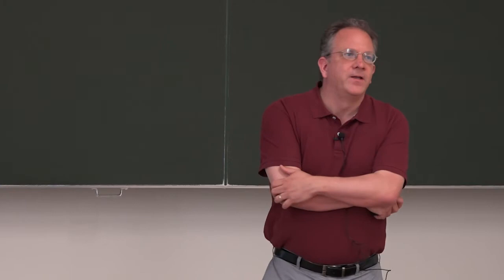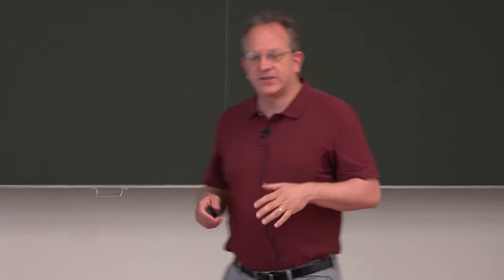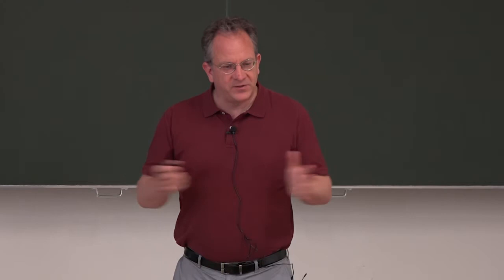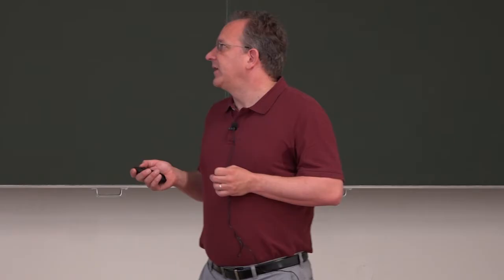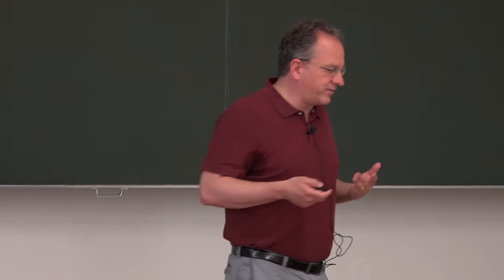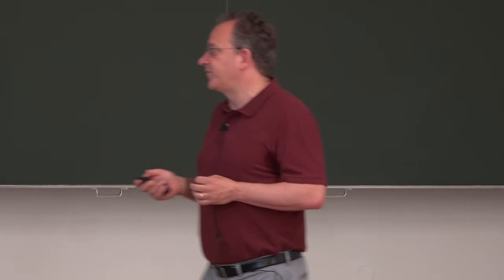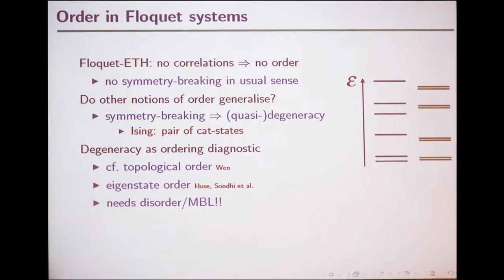So that finishes my first question — what happens to thermodynamics? The zeroth-order answer is it gets completely boring. The first-order answer is that some interesting structures in many-body physics which have been discovered in static systems also persist in the periodically driven system. Now I'd like to move on to the issue of order in Floquet systems: if you've got states separated by a phase transition, does that kind of structure persist? For the generic case, no — all states are at infinite temperature with no non-trivial correlations, so there are no phase transitions. However, in MBL systems you can nonetheless define a notion of order called eigenstate order.